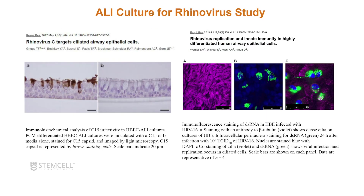ALI cultures have also been used for the study of rhinovirus. In this first set of figures, they examined the C15 rhinovirus and stained the C15 capsid in brown, showing that the virus readily infects ciliated airway epithelial cells. In the second set of figures, the group stained for cilia and the virus in green, and you can see a loss of cilia in the cells that have been infected with rhinovirus.